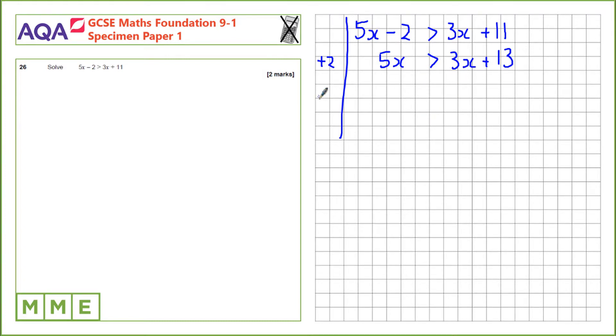The next step, let's take away 3x. 5x take away 3x is 2x. And 3x take away 3x is 0. So, we'll just be left with 13 on this side.